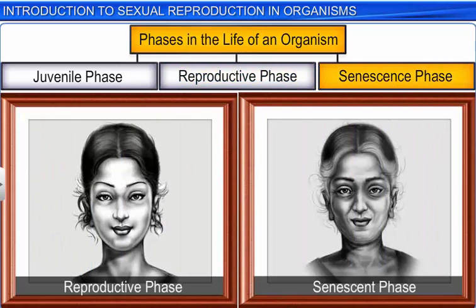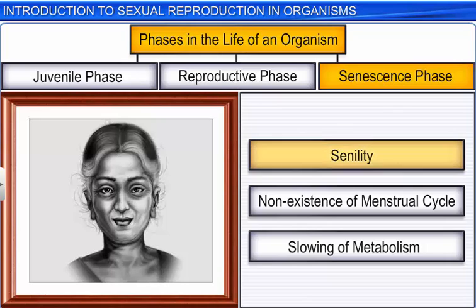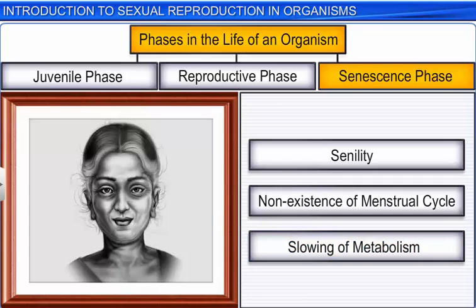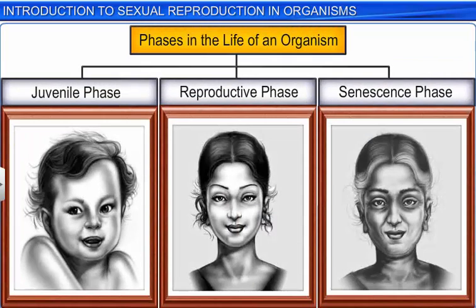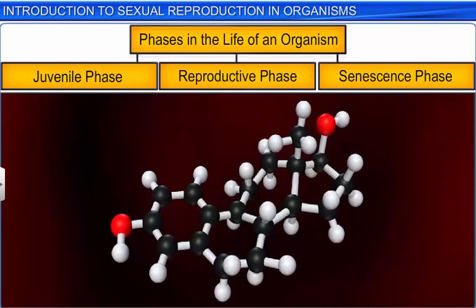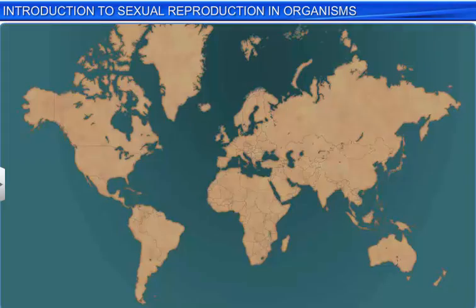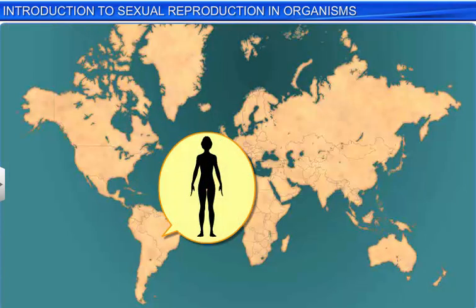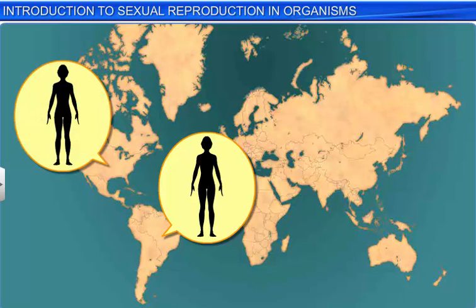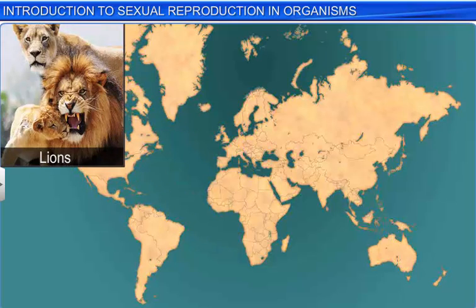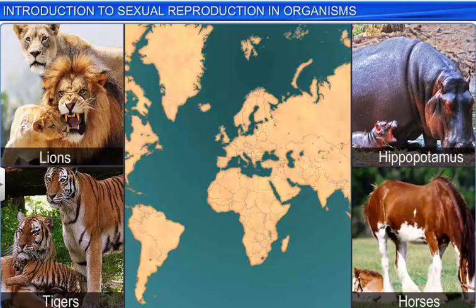The end of the reproductive phase in living organisms coincides with the beginning of the senescent phase, during which we see changes such as senility, non-existence of the menstrual or estrus cycle, and slowing of metabolism. Senescence ultimately leads to death. Interestingly, the transition between the three stages is controlled by hormones as well as environmental factors. For instance, the release of the hormone estrogen triggers the menstrual cycle in girls, and girls living in tropical regions experience menstruation at an earlier age than those living in temperate regions. In most organisms, the reproductive phase plays a crucial role as it ensures continuity of life.